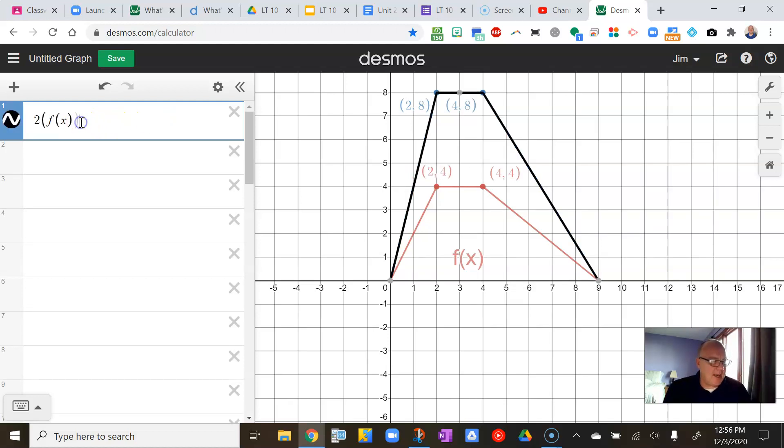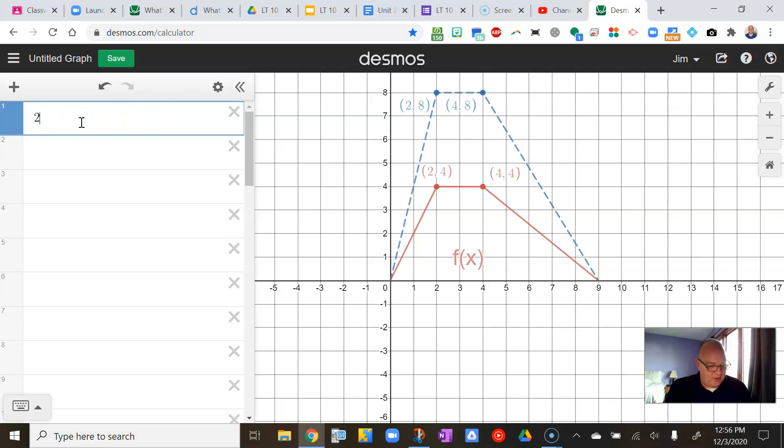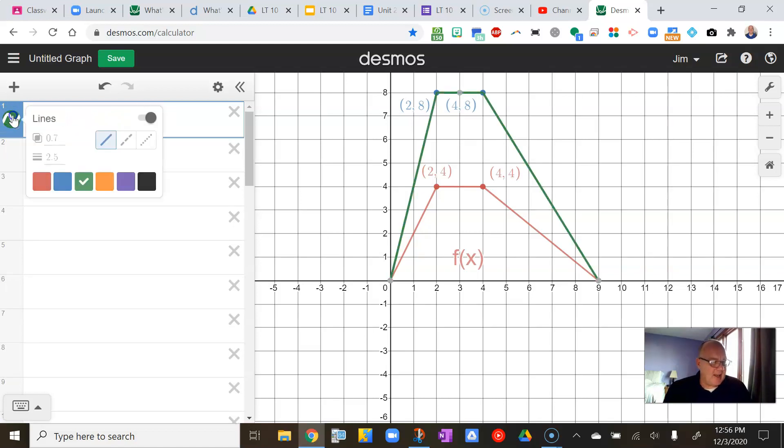And knowing that a vertical stretch is a multiplier, I can say that this blue graph is going to be 2 times f of x. And when I put 2 times f of x, or I can just write that as 2f of x, you will see that it takes on the behavior of that blue graph.